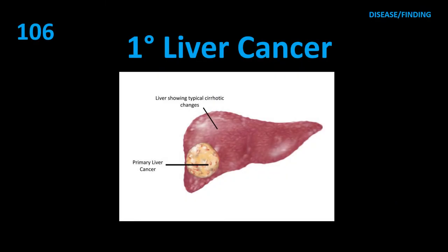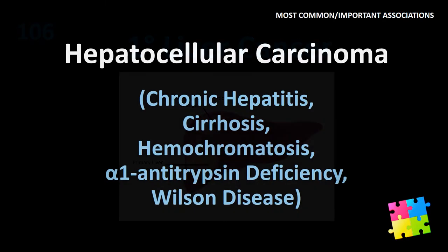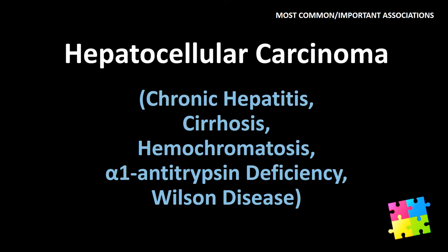Item 106: Primary liver cancer — hepatocellular carcinoma. Associated with chronic hepatitis, cirrhosis, hemochromatosis, alpha-1 antitrypsin deficiency, and Wilson disease.